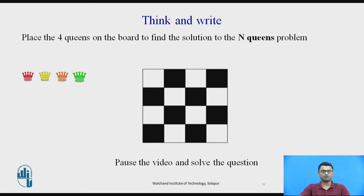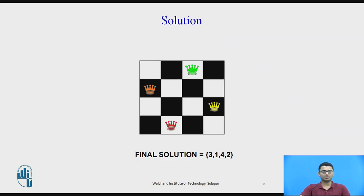At this point, pause the video and place the four queens on the board to find another solution to the N-Queens problem. We have already seen one solution to the 4×4 chessboard. Try to find another solution. If you applied the backtracking approach, you will find that another solution is 3, 1, 4, 2 — the first queen in the third column, the second queen in the first column, the third queen in the fourth column, and the fourth queen in the second column. This is the final second solution to the problem.